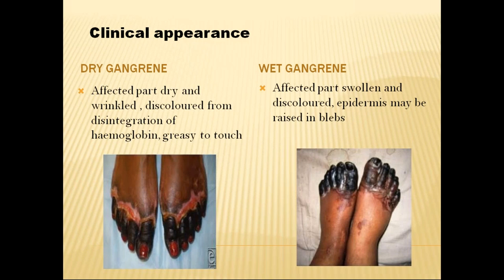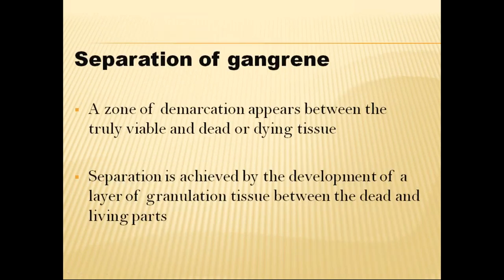A line of demarcation appears between the truly viable and dying tissue. Separation is achieved by the development of a layer of granulation tissue between the dead and living parts. In dry gangrene, the final line of demarcation appears within days, occurs neatly and with minimum infection — that is, aseptic ulceration.